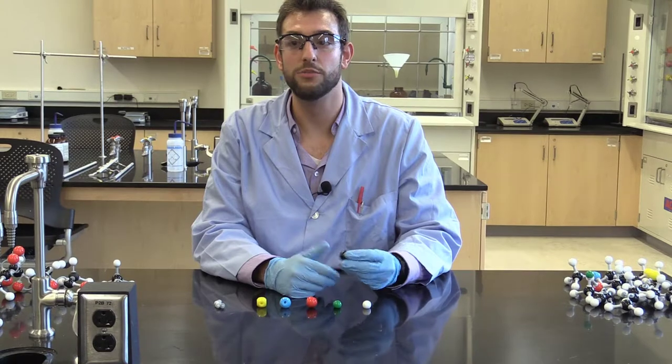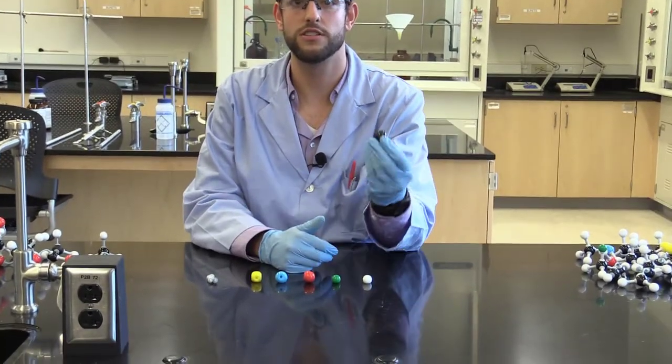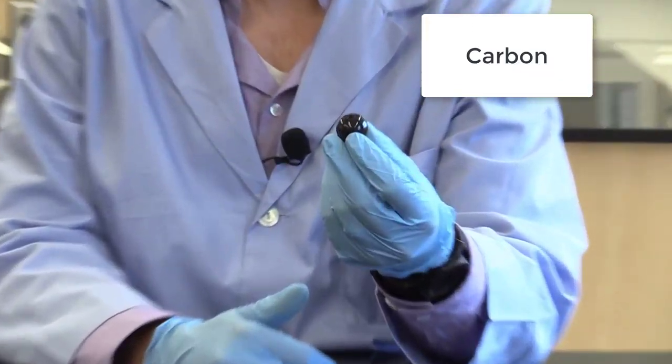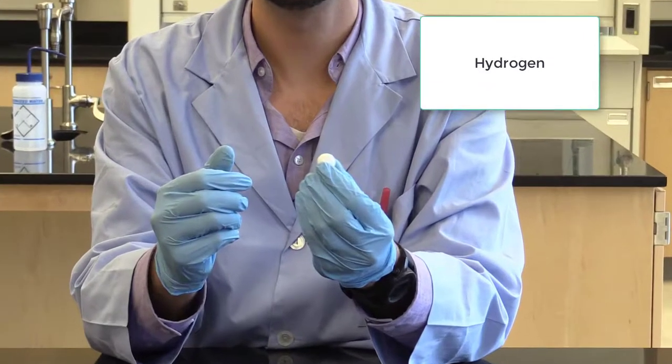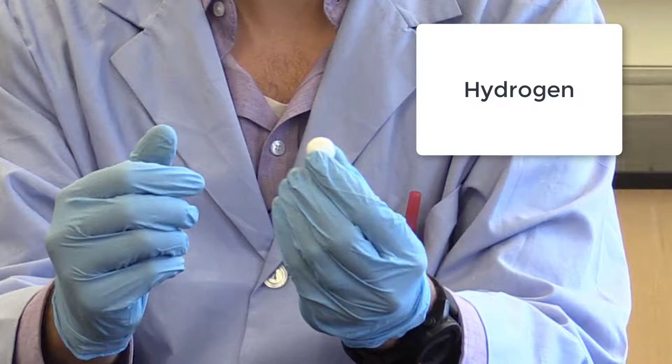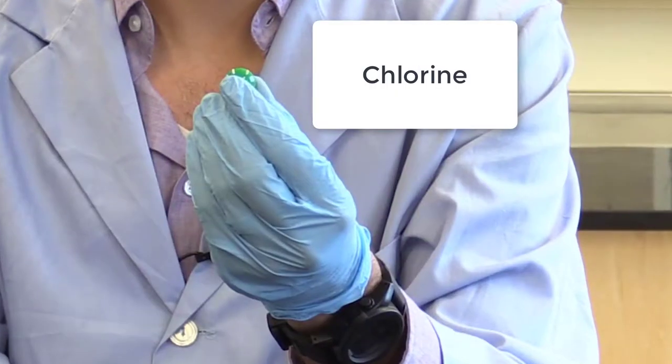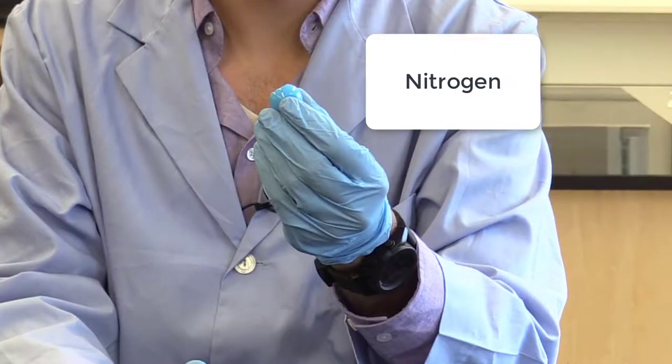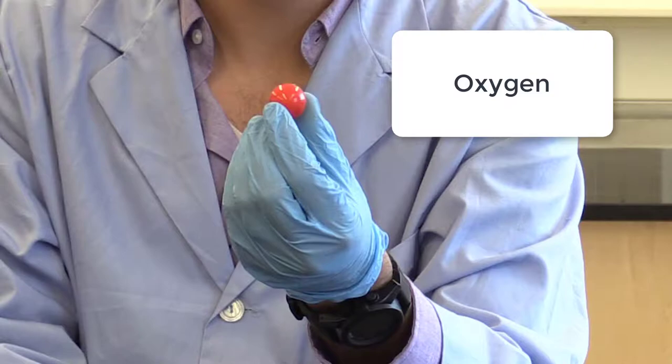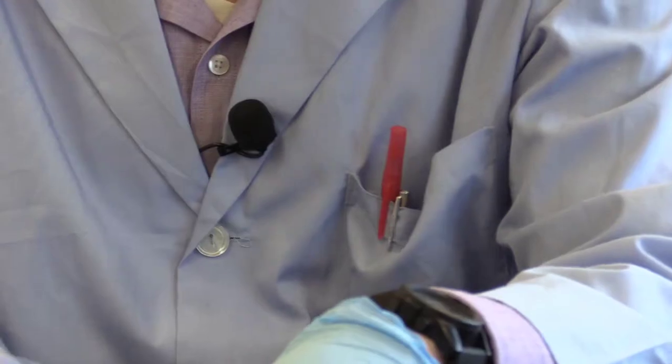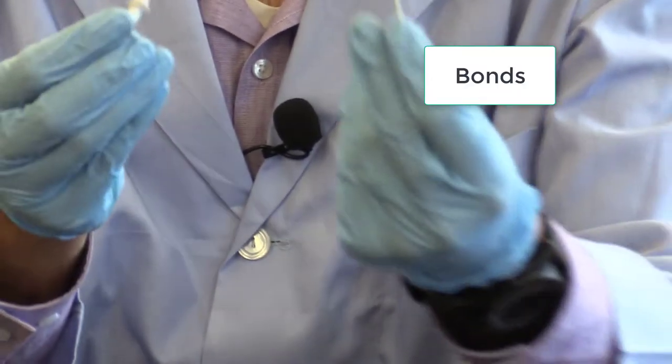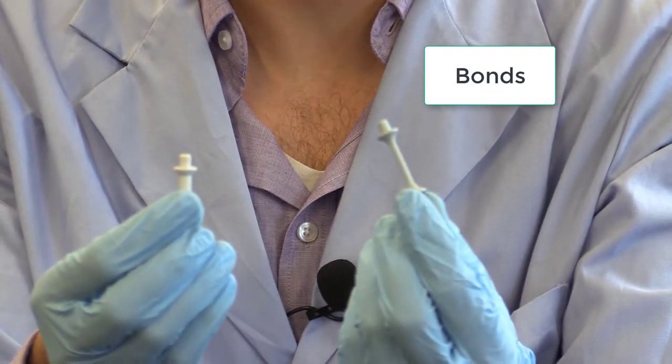So what each element is before I show the structures: this is carbon, this is hydrogen, this is chlorine, this is nitrogen, this is oxygen, this is sulfur, and then these two guys are the connectors making the different bonds.